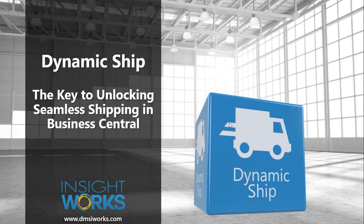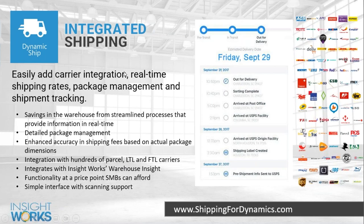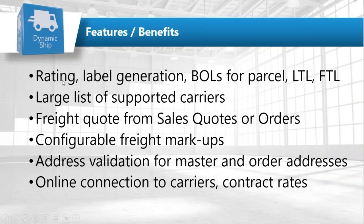Dynamic Ship allows you to access your carriers through Business Central — either your contracted rates or carriers you don't have a specific account for, like the UPS DAP program, USPS, and others. It goes out, gets the rates for your shipments, generates shipping labels, and does a bunch of other things. We can get shipping costs across multiple carriers simultaneously, generate labels, and create bills of lading for parcel, LTL, and FTL shipments. We support roughly 500 carriers within the system.